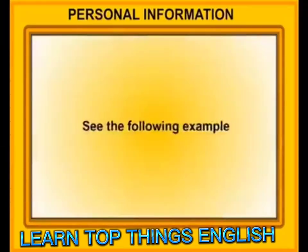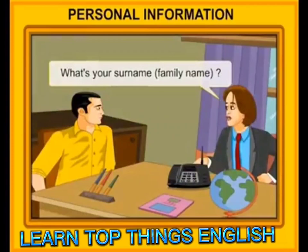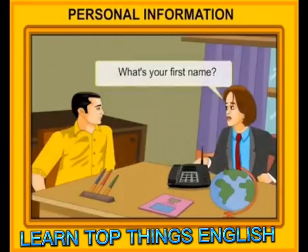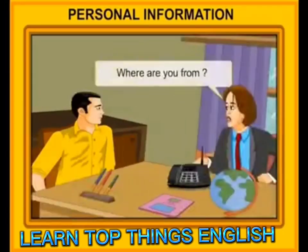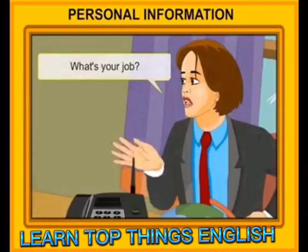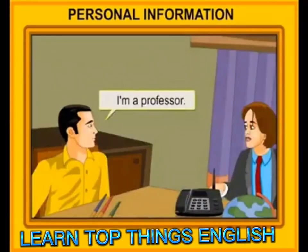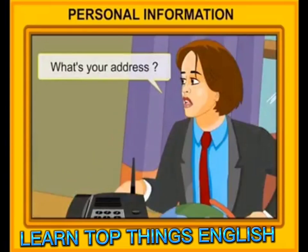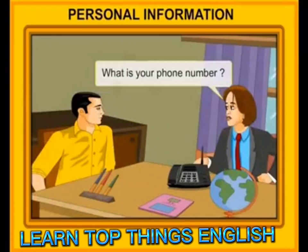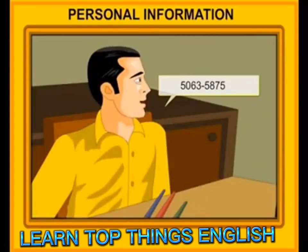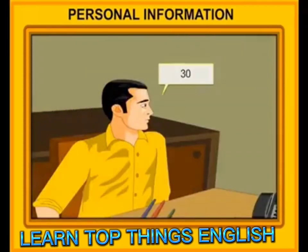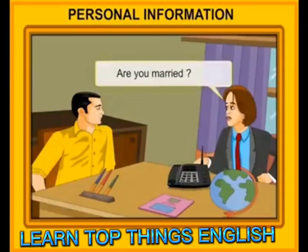Personal information. This conversation is useful when you are giving full information about yourself in a short manner. What's your surname? Deekshith. What's your first name? Robin. Where are you from? New Delhi. What's your job? I am a professor. What's your address? 12 Cannot Street. What is your phone number? 5063 5875. How old are you? 30. Are you married? Yes, I am.